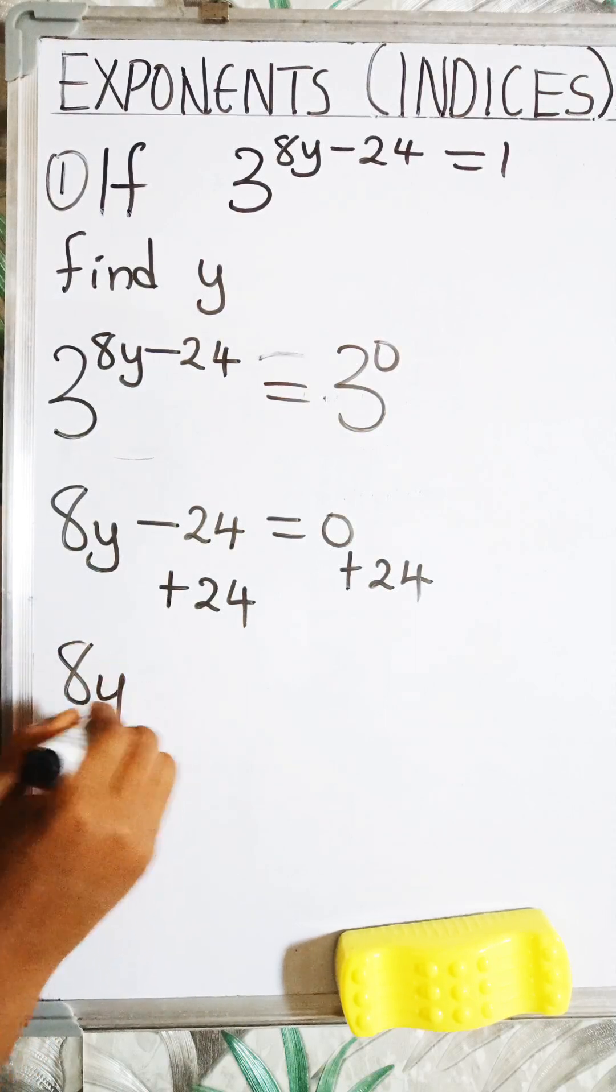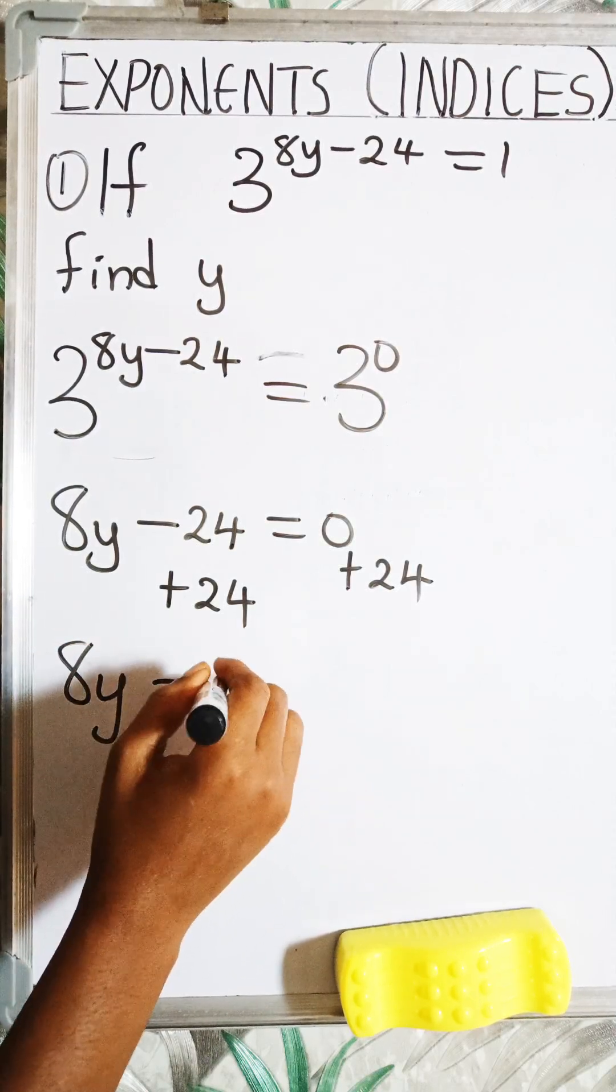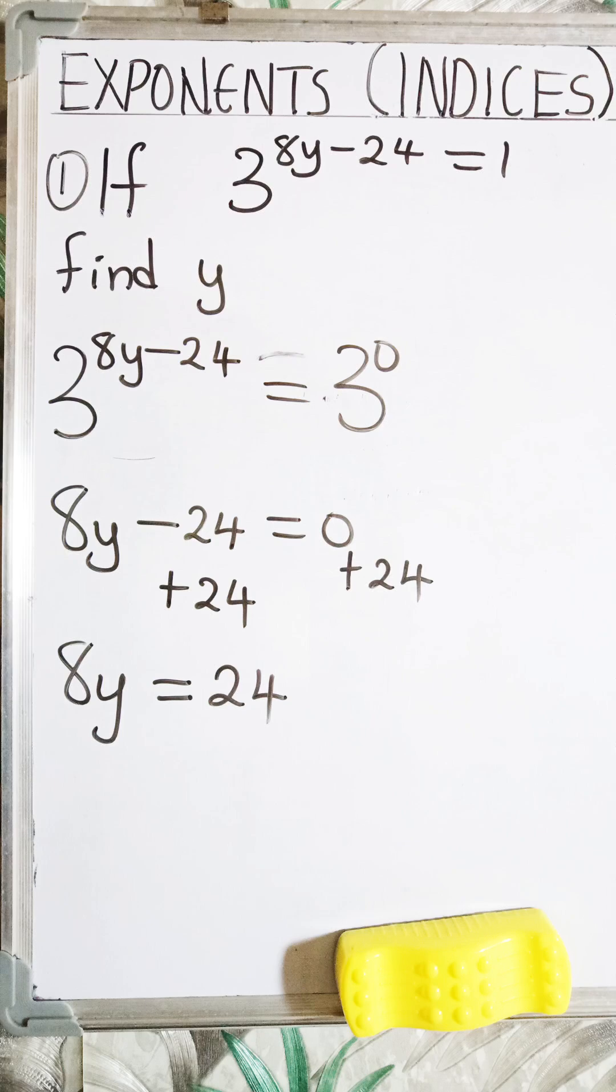So now we are going to have 8y equal to 24. Okay, we've added 24 to this other side of the equation.